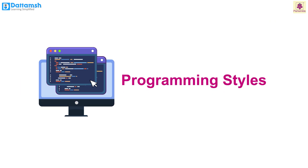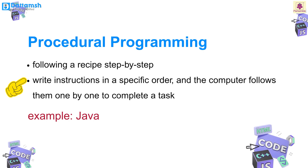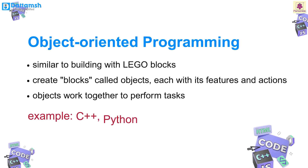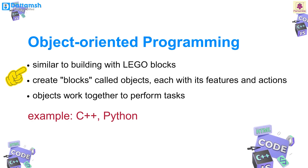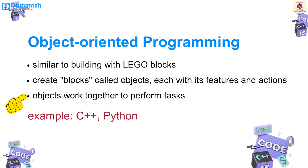Now let's look at three popular programming styles. Procedural programming is like following a recipe step by step — you write instructions in a specific order and the computer follows them one by one to complete a task. Example: Java. Object-oriented programming (OOP) is similar to building with LEGO blocks — you create blocks called objects, each with its features and actions, and these objects work together to perform tasks. Examples: C++, Python.